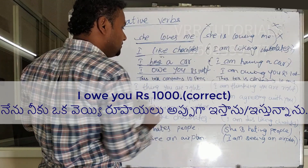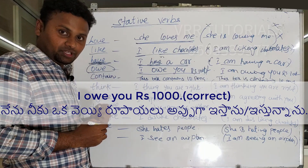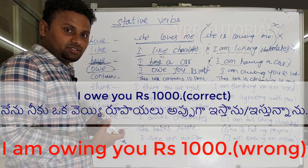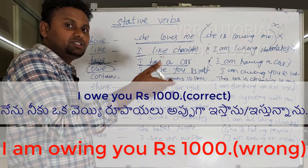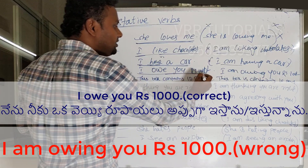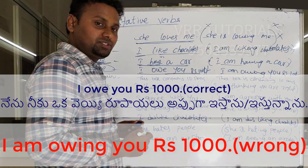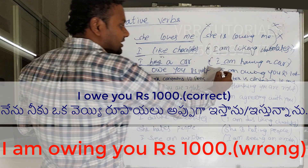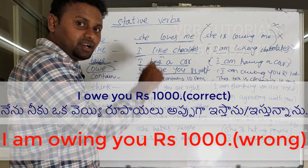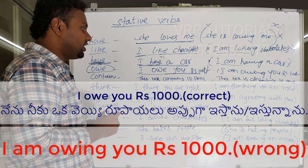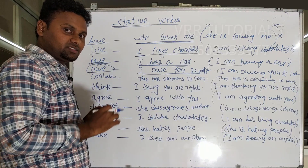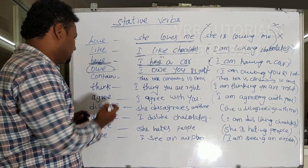Another example: 'I love you thousand rupees' — meaning I owe you a thousand rupees. This is a stative usage. Saying 'I am loving you thousand rupees' is an incorrect sentence. So the correct form is: I love you thousand rupees. It is stative, so it doesn't take continuous form.